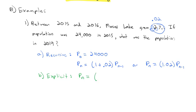So it might be better to find the explicit formula. The explicit formula says P sub n equals the ratio 1 plus 0.02 raised to the n power times the initial value, which is 24,000. Or we can do that math in parentheses: 1.02 to the n power times 24,000. Now we have an explicit formula for the population at any point in time.